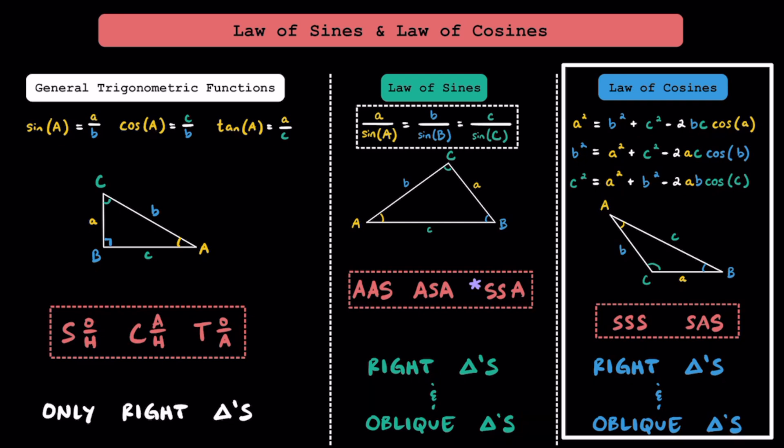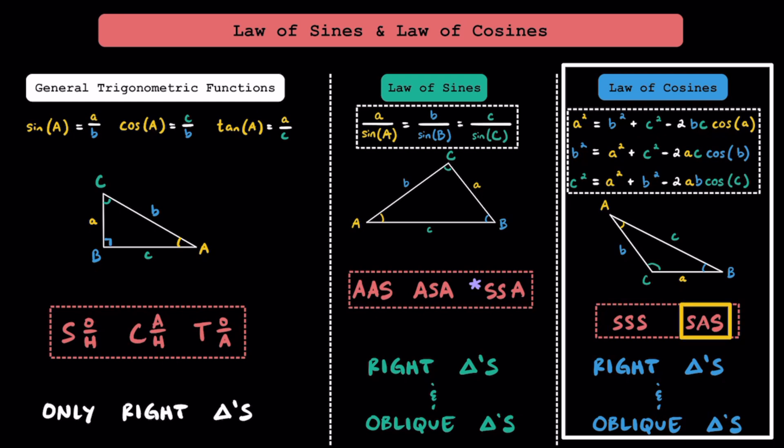Then there's the law of cosines. These are the three different formulas that make up the law of cosines that we can use to solve triangles. As opposed to the law of sines, we're going to use the law of cosines when we have all three sides of a triangle or the side-angle-side of a triangle. Just like the law of sines, the law of cosines is going to work for all triangles.